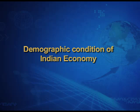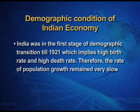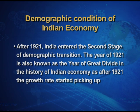Demographic condition means the quality of population, which can be assessed using qualitative indicators like literacy rate. The first official census in India was conducted in 1881. Census figures collected since 1881 showed unevenness in India's population growth. India was in the first stage of demographic transition until 1921, which implies high birth rate and high death rate, and therefore the rate of population growth remained very slow. After 1921, India entered the second stage of demographic transition. The year 1921 is thus known as the year of the great divide in Indian economic history, as after 1921 the growth rate of population started picking up.